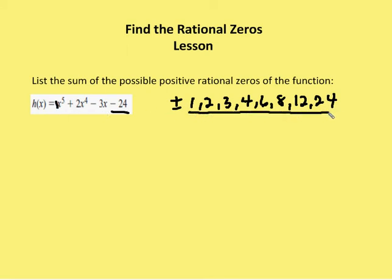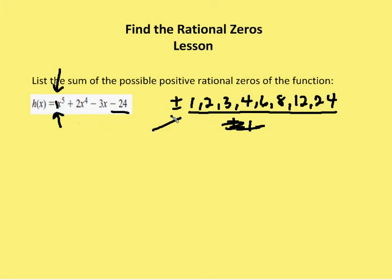Now you see that the coefficient for the leading term is one. It really becomes irrelevant because the factors of the constant divided by the factors of the leading coefficient just end up being the factors of the constant, because anything over one is still just that number. Four over one is still four, three over one is still three, two over one is still two, one over one is still one. So when the leading coefficient is one, the possible zeros are just the factors of the constant.